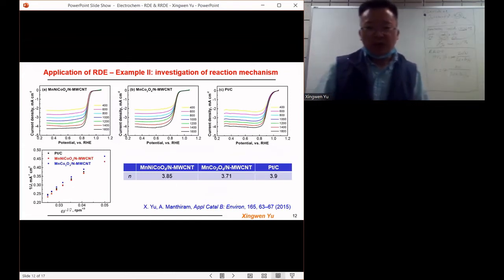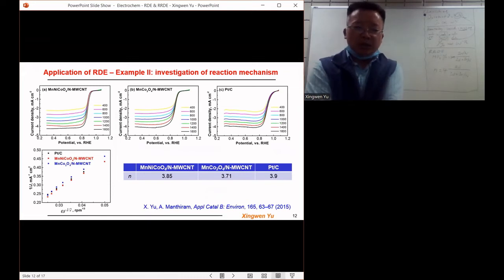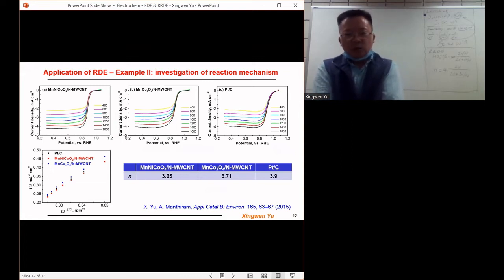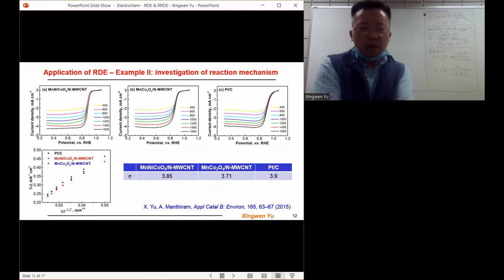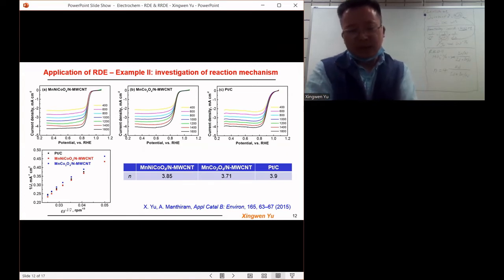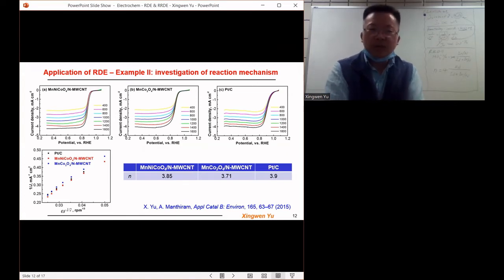This slide shows a real example from my own research studying the catalyst, to see how good the catalyst is, if the catalyst can catalyze the oxygen reduction reaction through a four electrons pathway. That means the catalyst is good; otherwise, if it follows two electrons, the catalyst is not a good one.